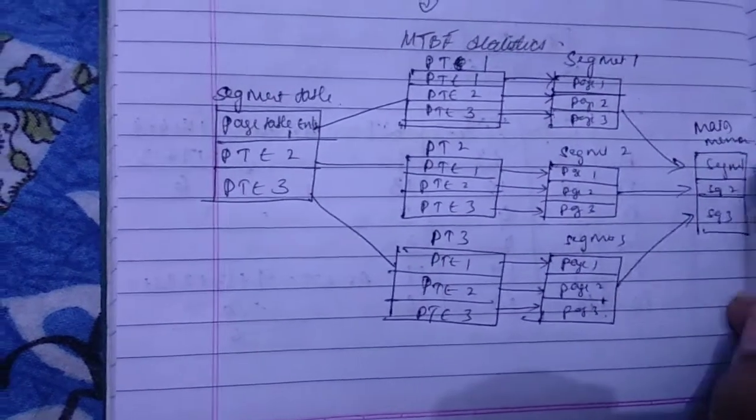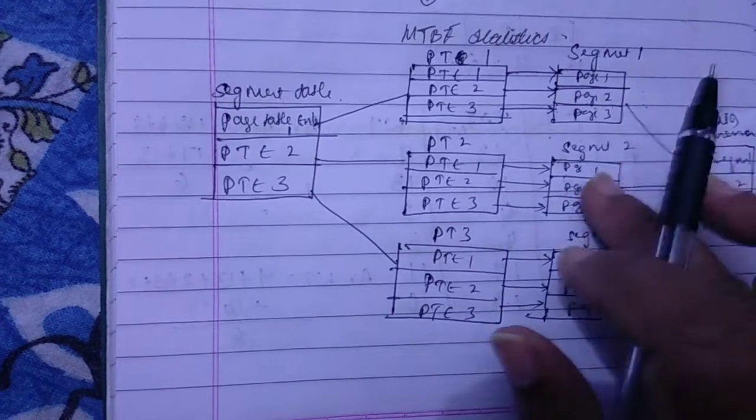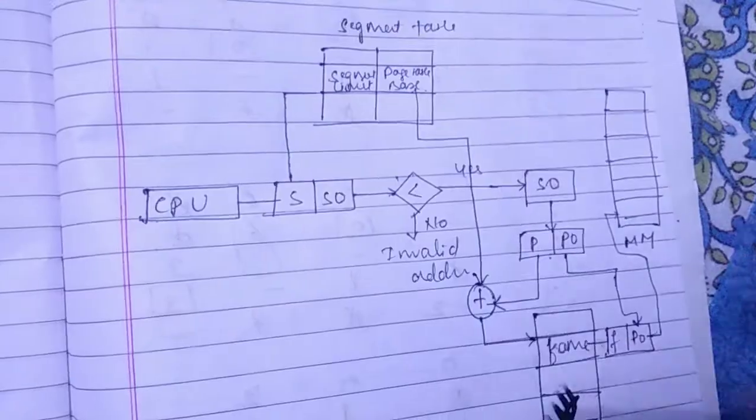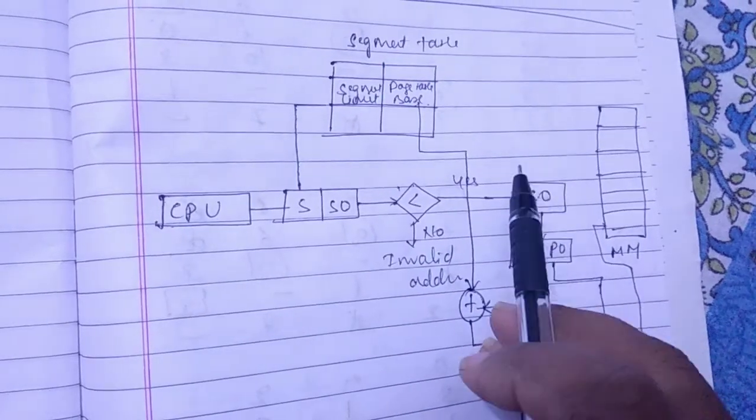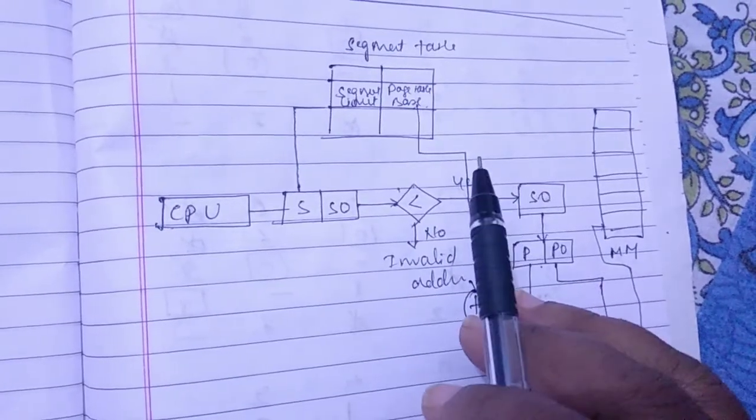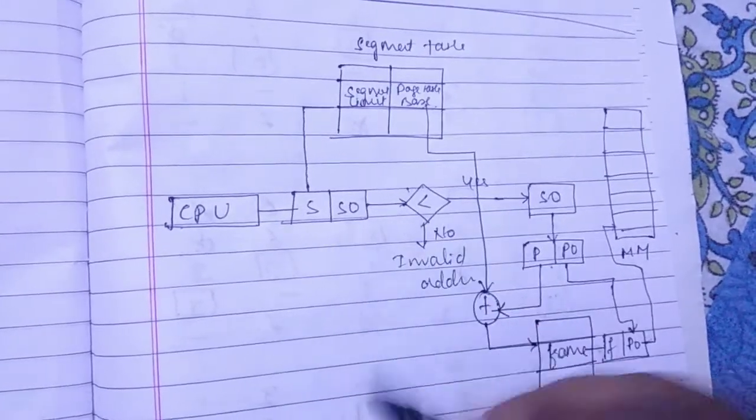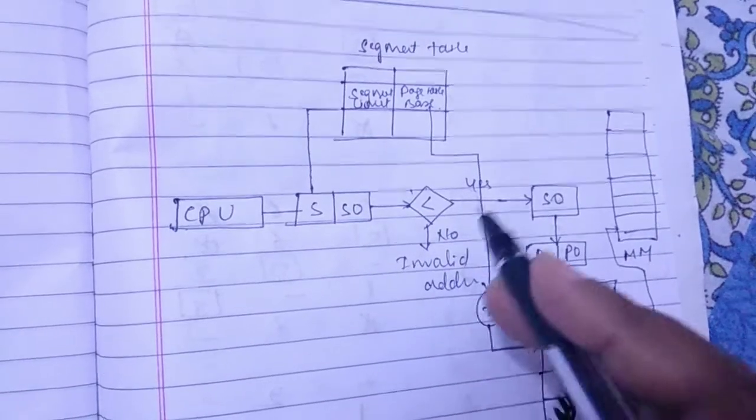Which are stored in the main memory. So this is how the arrangement of a segment and page is been made in segmented paging. As in case of paging and segmentation, even in segmentation with paging also requires a conversion of a logical address into a physical address. So we will see how it can be done.